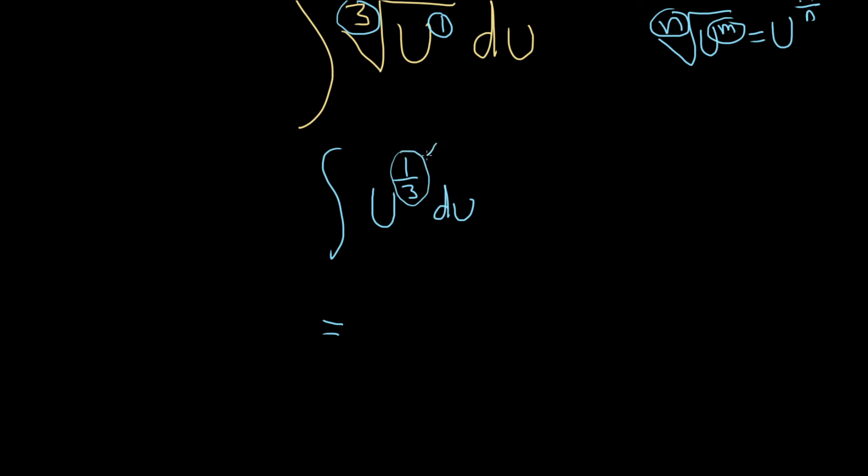So the power rule just says that you add 1 to this exponent. So if you can't do it in your head, you just go to the side and do it. 1 third plus 1. So you can think of 1 as 3 thirds. And then so you just add the numerators. 1 plus 3 is 4. So you get 4 thirds.